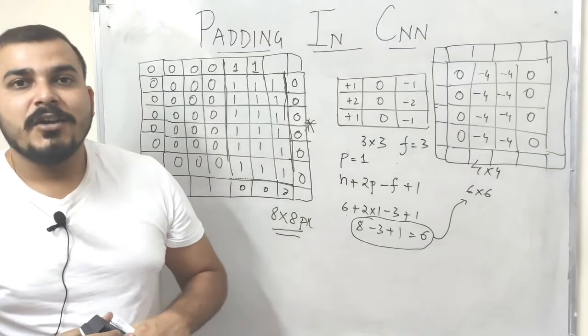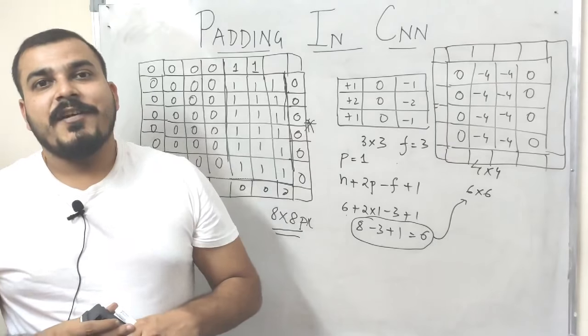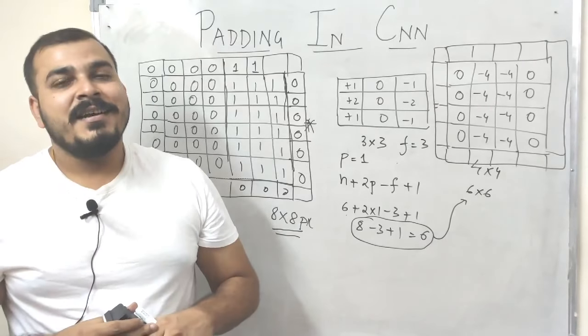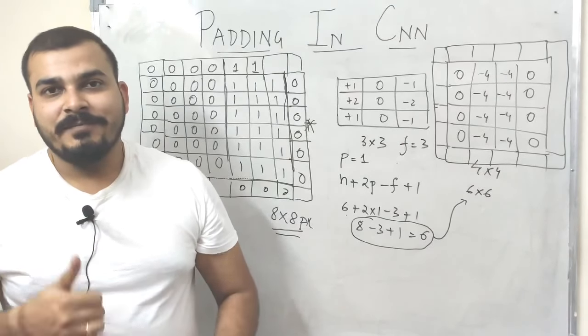I hope you understood why we basically need to apply padding — so we do not remove information from the images and can extract more information from all six cross six pixels. This was a video all about padding. I hope you liked it. Please subscribe to the channel if you have not already done so. I'll see you in the next video. Have a great day. Thank you.